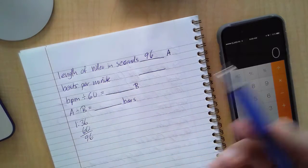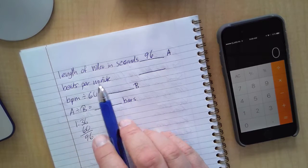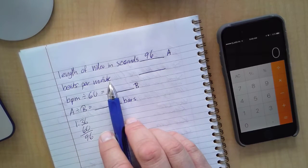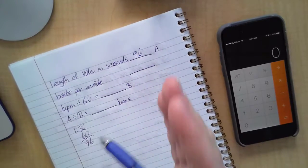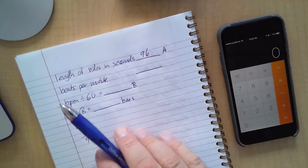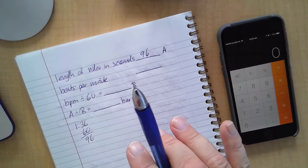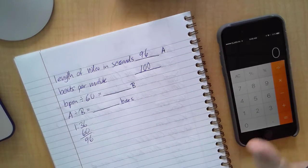Okay, now beats per minute. Most songs, most pop songs, are around 120 beats per minute. That's how quick the beat is for your song. Now that's a little too fast for our Kiva video. 110 slows it down, but 100 is a nice slow beat for a song.